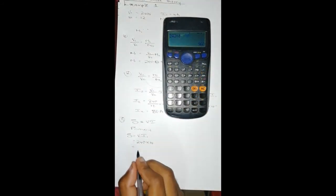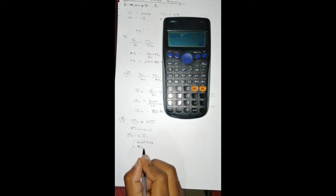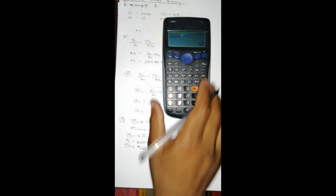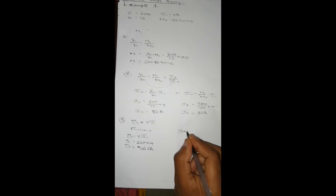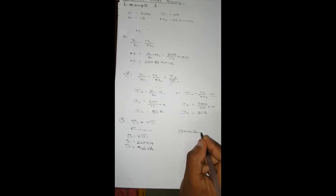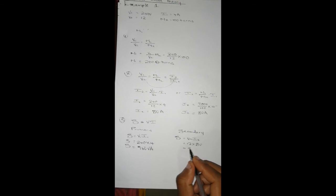And the secondary side is S = V2 × I2. V2 is 12 and I2 is 80. Punch that into the calculator, you get 960 VA, which is the same.